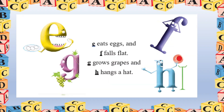E eats eggs and F falls flat. G grows grapes and H hangs a hat. Repeat with me — E eats eggs and F falls flat. G grows grapes and H hangs a hat. Very good! Now repeat all together — E eats eggs and F falls flat, G grows grapes and H hangs a hat.